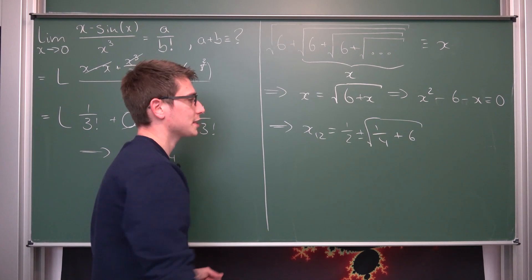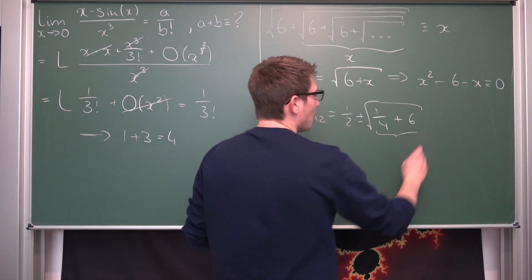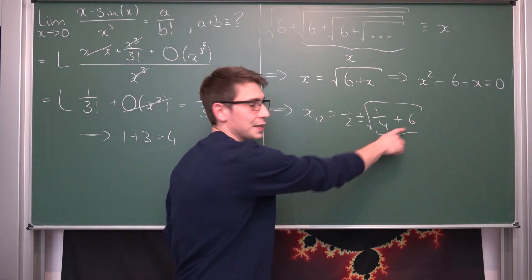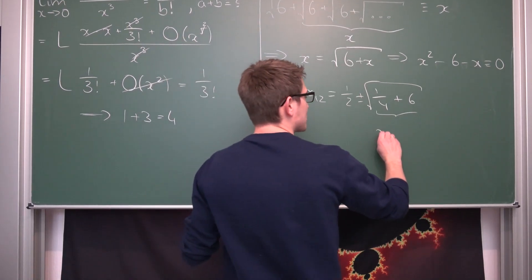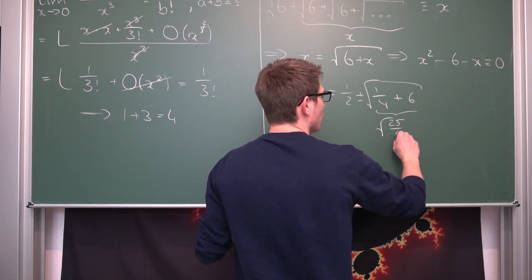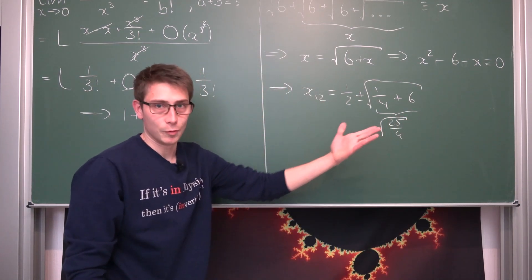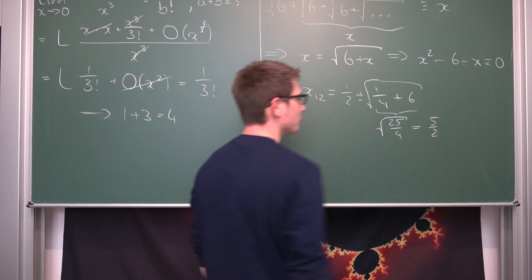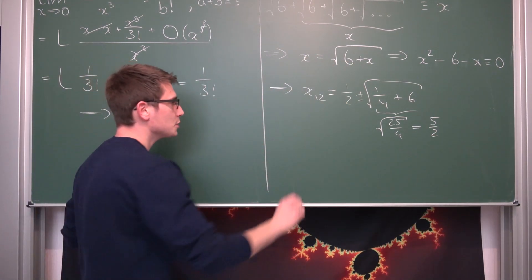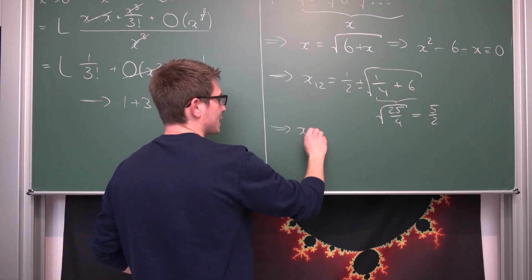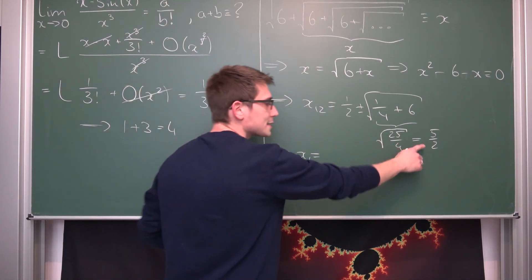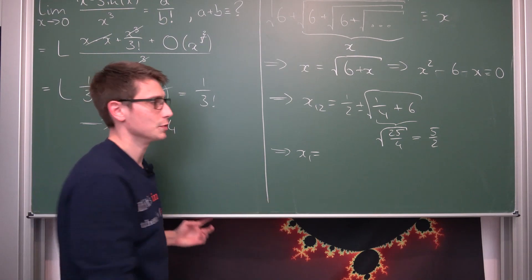Negative sign is going to turn into positive one half plus minus the square root of one quarter, and negative and negative is going to become positive, so plus 6. Now one quarter plus 6 is going to turn into 25 over 4. So this is the square root of 25 over 4. Square root of 25 over 4 is going to collapse very nicely into nothing but 5 over 2. Meaning our two solutions are x1 being one half plus 5 over 2, which is 6 over 2 giving us 3.